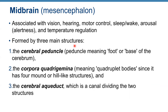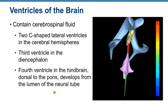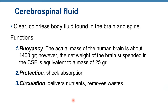The midbrain is made of three main structures: cerebral peduncles (peduncle means foot or base), corpora quadrigemina (corpus means body, quadrigemina means four — four hill-like structures), and the cerebral aqueduct. The cerebral aqueduct is a canal dividing the cerebral peduncles and corpora quadrigemina, and it connects the third ventricle to the fourth ventricle.